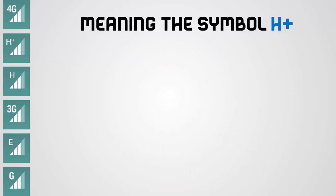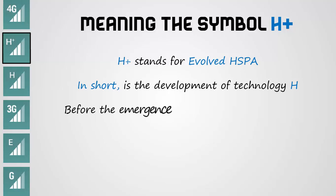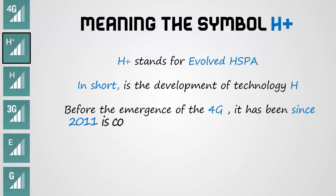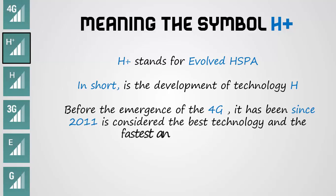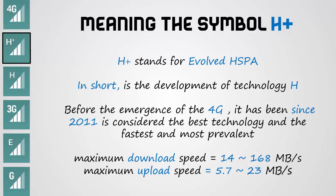Meaning of the symbol H+: H+ stands for Evolved HSPA, which is the development of technology H. Before the emergence of 4G, since 2011 it has been considered the best, fastest, and most prevalent technology. Maximum download speed equals 14 to 168 megabytes per second. Maximum upload speed equals 5.7 megabytes per second.